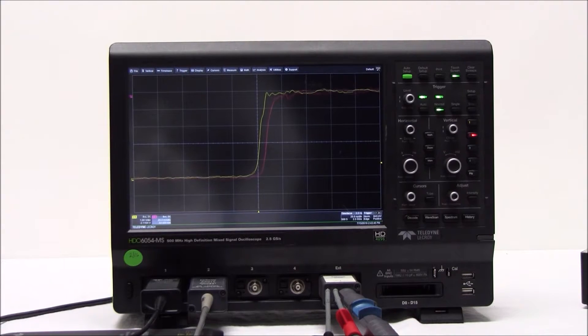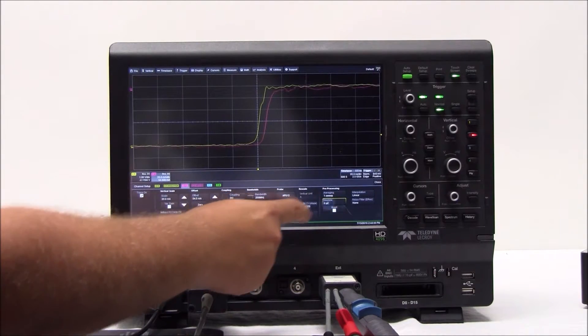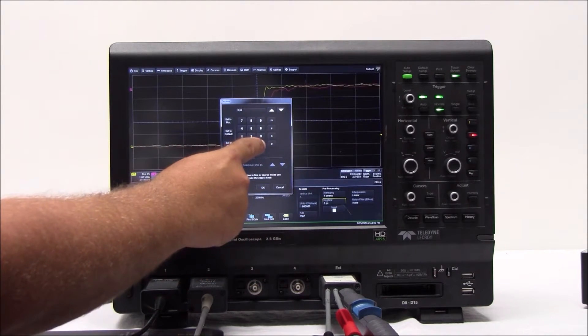To deskew the probes, we are using the DCS015 deskew calibration source, which generates time-aligned current and voltage waveforms. We connect our voltage and current probes to the DCS015 and then in the channel 2 setup dialog, we will adjust the deskew value to align the waveforms.